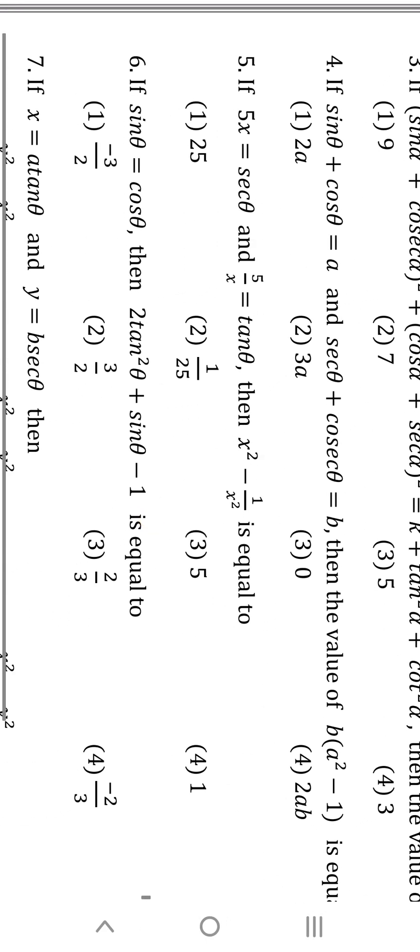Sixth question: sinθ = cosθ. Then 2tan²θ + sin²θ + sinθ - 1. The numbers here are 2 and 1. So we add 2 plus 1 to get 3, divided by 2, giving 3/2. The answer to the sixth question is 3/2. Easy.